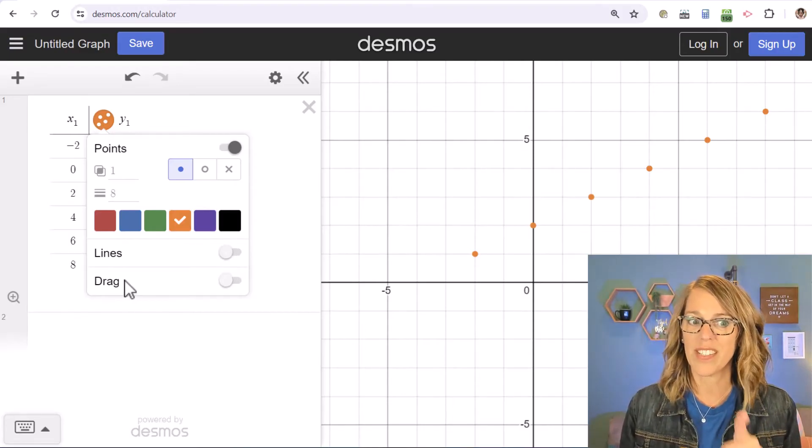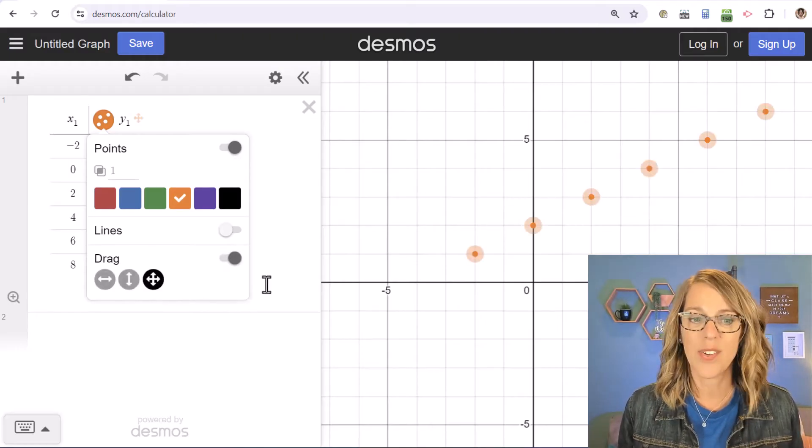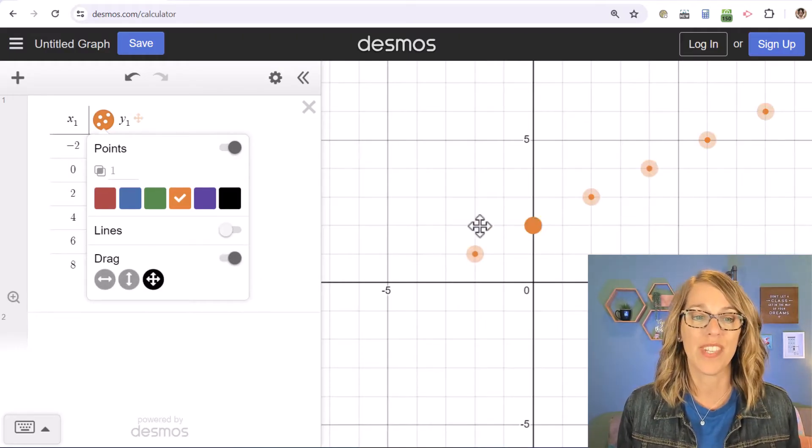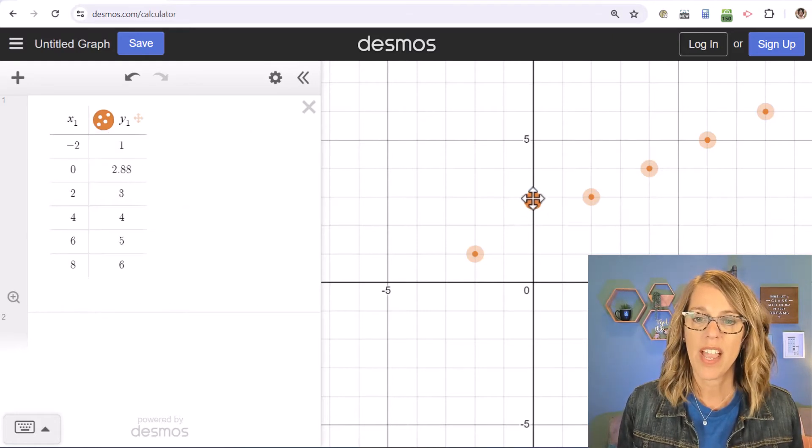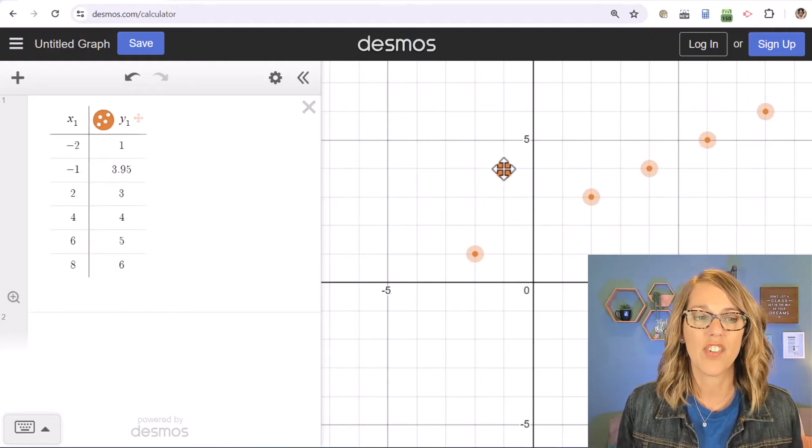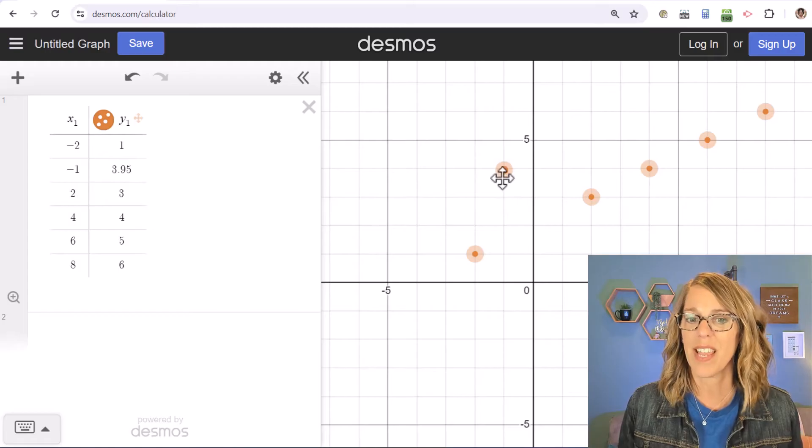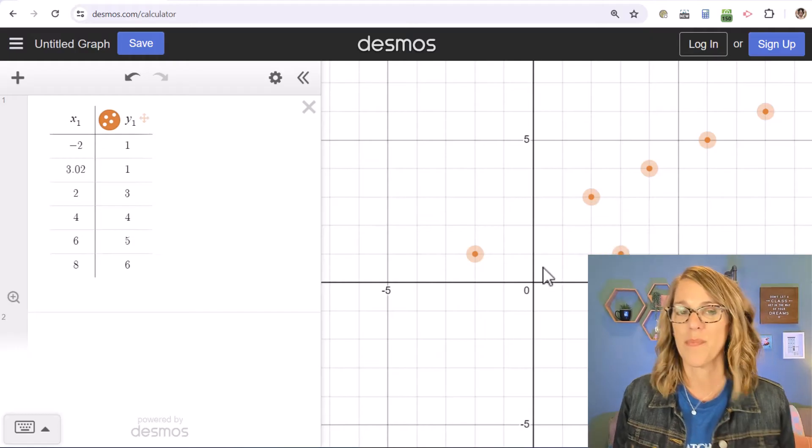But there's also this new addition that says drag. If I click on drag, it's going to let me move these points. Let me click off of this somewhere else and I'm going to pick on this point which happens to be zero two and I can go ahead and move this to another place. Notice how it's changing that in my table as well. I can move it over here. So just a really nice way to work with some points.